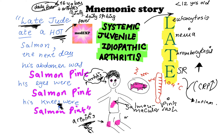Treatment would involve NSAIDs, steroids, and methotrexate — very similar to what we discussed in the rheumatoid arthritis video. So remember, when it's juvenile idiopathic arthritis, it's 'late Jude who ate a hot salmon,' and the next day he had all these symptoms. If you like this mnemonic, please subscribe, like, and leave a comment. Thank you so much.